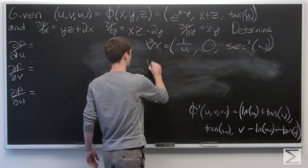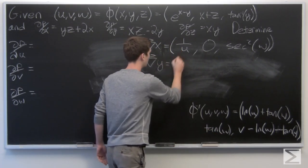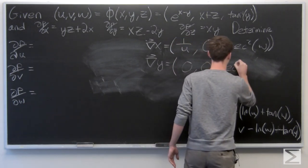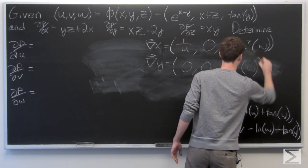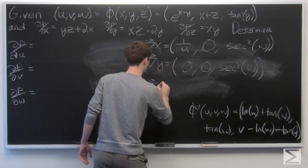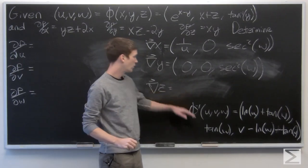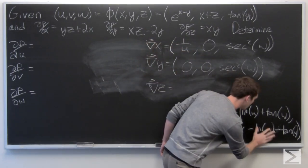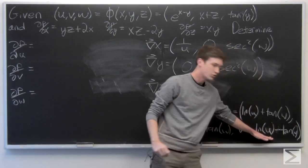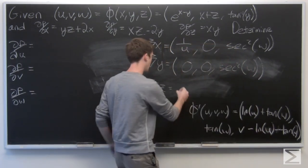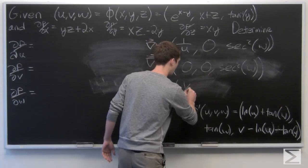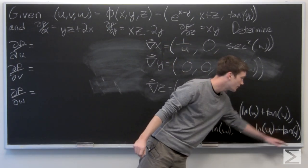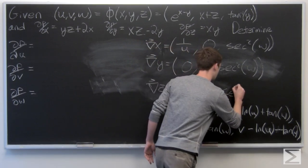The gradient vector of y, which is tangent of w, has partial derivative with respect to u equal to 0, partial derivative with respect to v equal to 0, and partial derivative with respect to w equal to secant squared of w. For the gradient vector of z, we have negative 1 over u with respect to u, 1 with respect to v, and negative secant squared of w with respect to w.